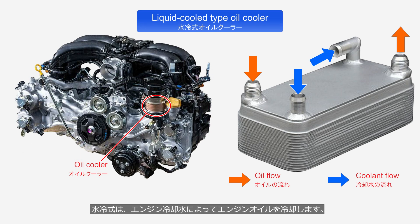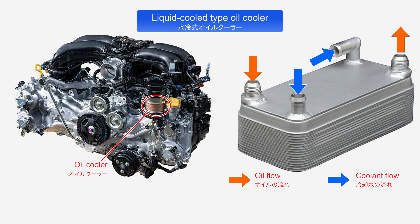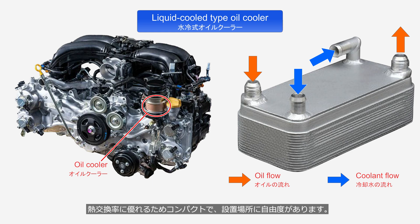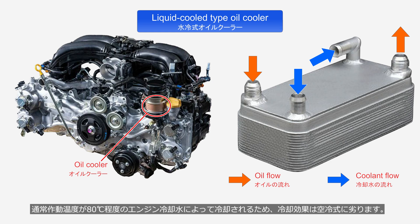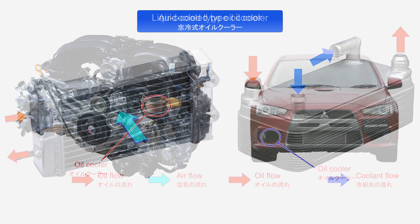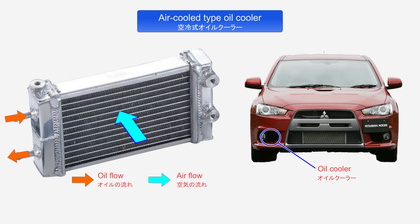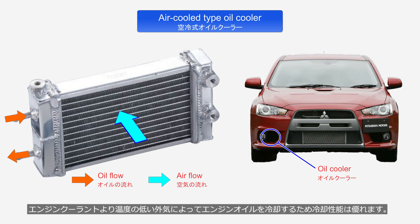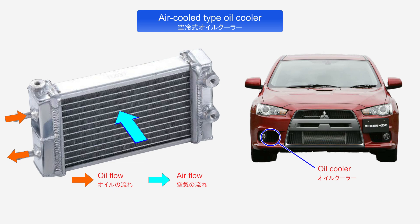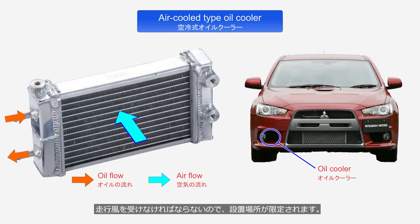The liquid cooled type cools the engine oil using the engine coolant. Thanks to its excellent heat exchange efficiency, it is compact and offers flexibility in installation location. Since it is cooled by engine coolant, which normally operates at around 80 degrees Celsius, its cooling performance is inferior to that of the air cooled type. The air cooled type is installed in the front openings of the vehicle and cools the engine oil using the airflow generated while driving. It cools the engine oil using outside air, which is cooler than the engine coolant, resulting in superior cooling performance.